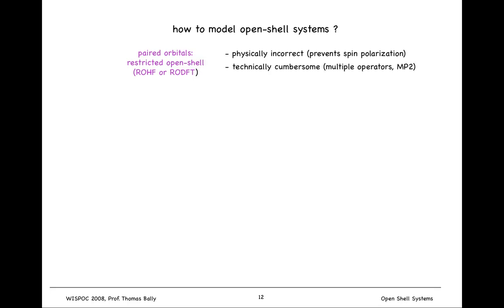It enforces double occupation of every orbital except those orbitals having only one electron. It's technically cumbersome to implement and it can lead to something called symmetry breaking, which is an artifact of having imposed this double occupation. I'm not really going to focus much on it except to say that usually I would choose not to do it because it's physically unrealistic.